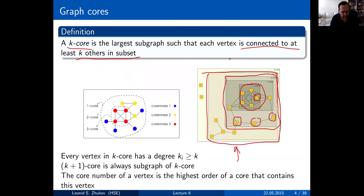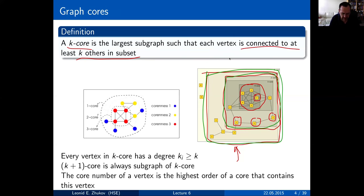You can also introduce what's called core numbers — the highest order of core that contains a particular vertex. Nodes that belong to core number one but not to core number two have a core number of one, and they're called k-shells. So you can refer to them as shell number one, shell number two, etc.